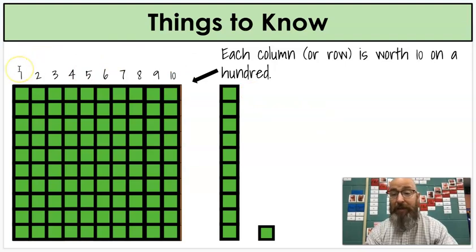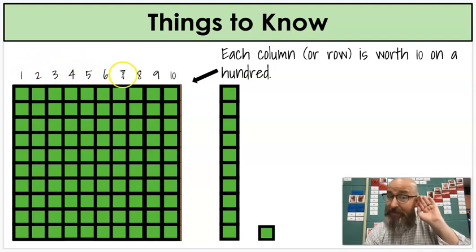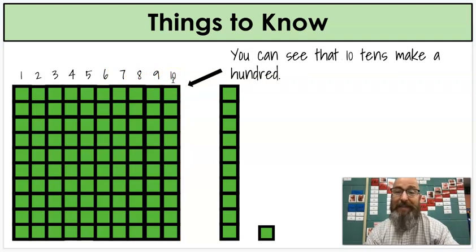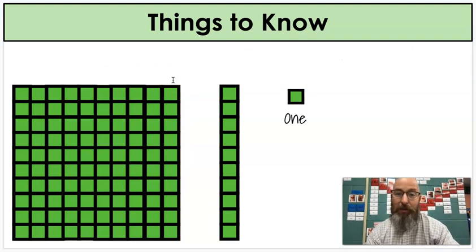And we can count them by ten, too. Count with me. Ten, twenty, thirty, forty, fifty, sixty, seventy, eighty. And so you can see that ten tens make a one hundred. So as a reminder, that's a one. This is a ten. And this is a hundred.